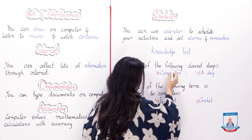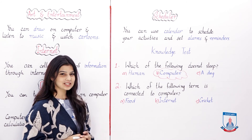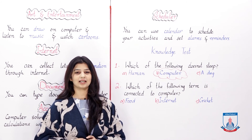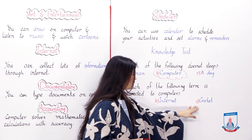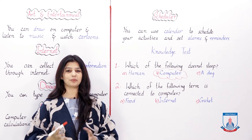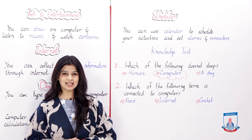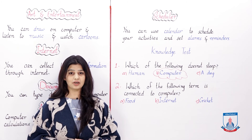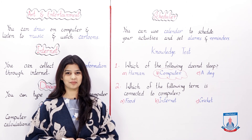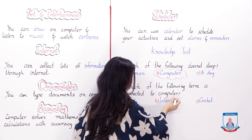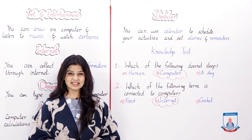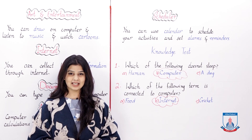Let's mark that. The next question is: which of the following terms is connected to computers? The options are food, internet, or cricket. The computer doesn't eat food and cannot play cricket like us. The term connected to computers is internet, because the computer helps us get information through the internet. With this question, we have completed this unit. In the next lecture we will do the exercise. Take care of yourself — Allah Hafiz.